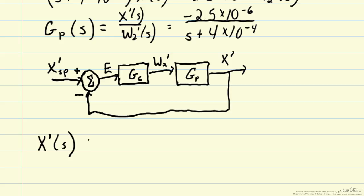So x prime is equal to gp times w2 prime, but w2 prime is equal to gc times the error. And the error is equal to x set point prime minus x. Again, we can rearrange, and we can calculate how x prime depends on x set point. So let's go ahead and collect terms.